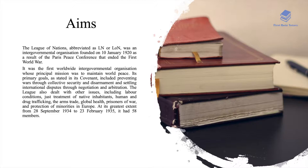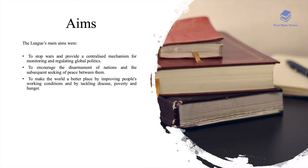The League also dealt with other issues including labour conditions, just treatment of native inhabitants, human and drug trafficking, the arms trade, global health, prisoners of war, and protection of minorities in Europe. At its greatest extent, from 20th September 1934 to 23rd February 1935, it had 58 members.